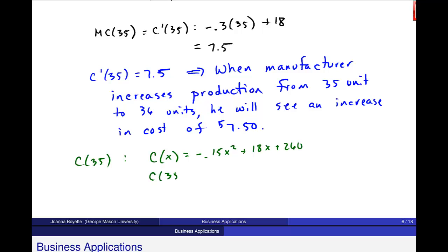And when I plug in 35 to that function, I'll just let you guys do that on your calculator. That's what I'll do. And I get a cost of $706.25. So the cost to produce 35 units is $706.25.